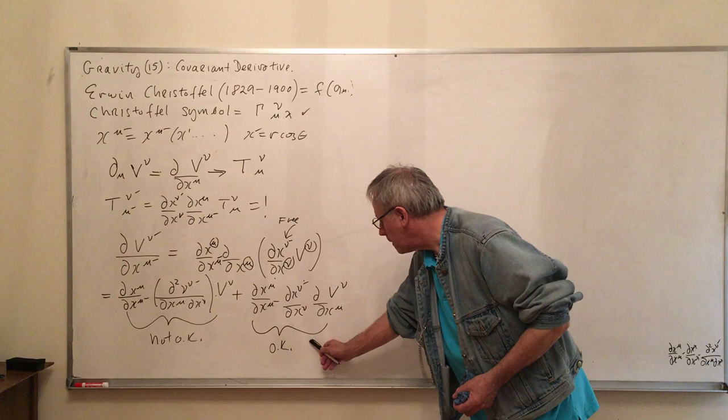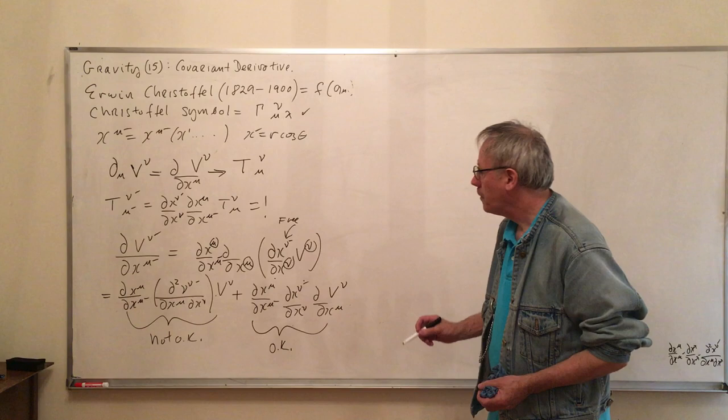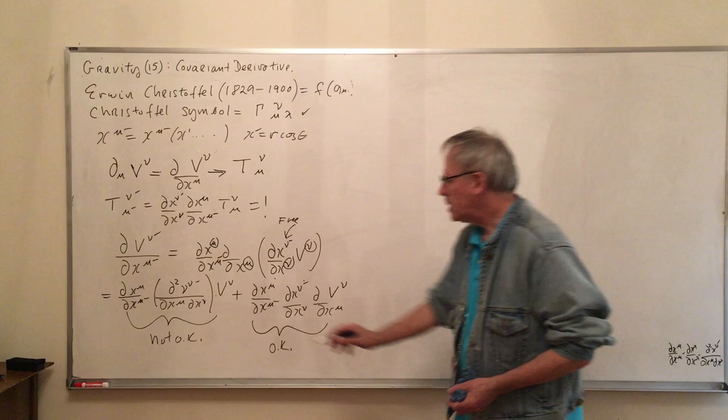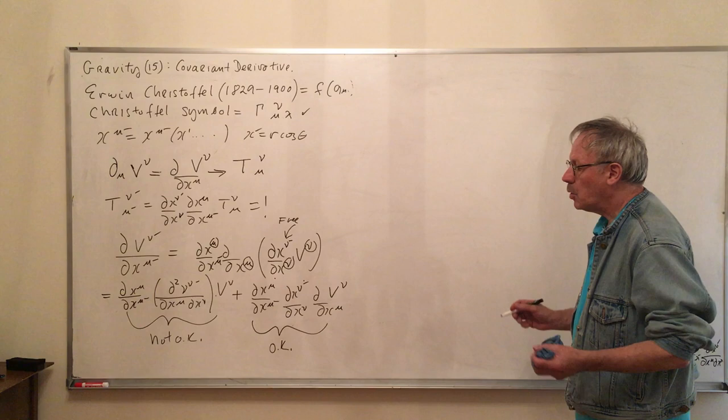This part of it does. This is what we expect. Because this is the original tensor, t mu nu. So this one is transforming correctly, t mu nu I mean. But this one has this other term in it that breaks it. So there's a problem. We're going to have to fix it.